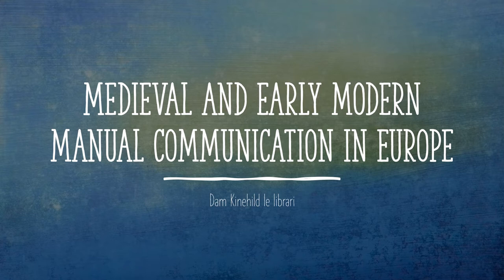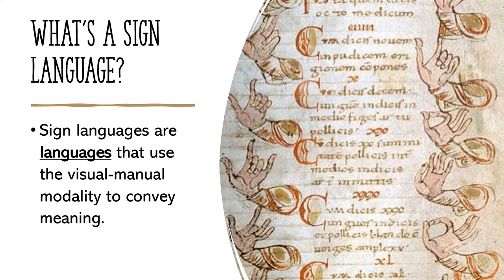So let's get into what we're talking about. Let's start with some definitions. What is a sign language? A sign language is a language that uses what's called a visual manual modality to convey meaning. The users are using their eyes and their hands — manual specifically meaning hands — but it does incorporate a broader range of body movements to convey meaning, whereas a spoken language uses your voice and your ears to convey the same idea.